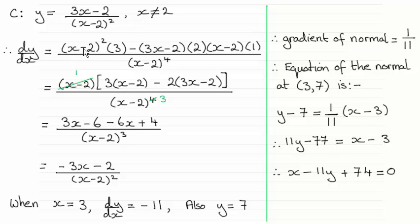I've pulled out x minus 2 as a common factor, and you can then see that it cancels with the denominator here. Clean this up, and you get this result.